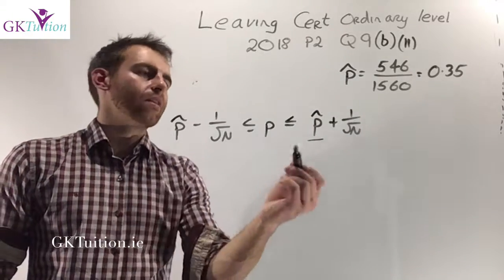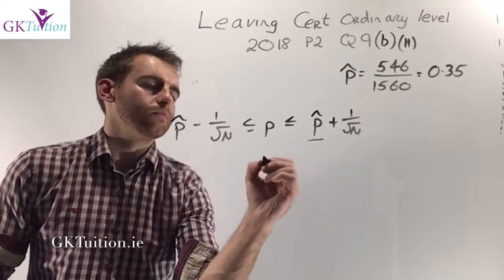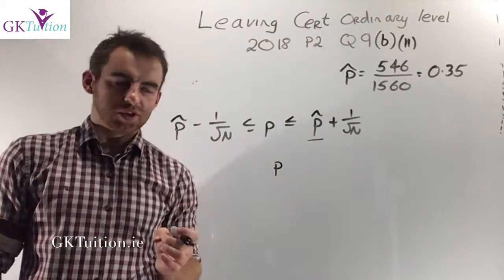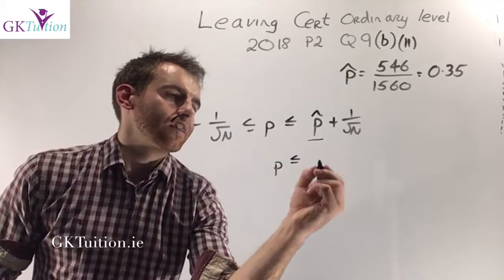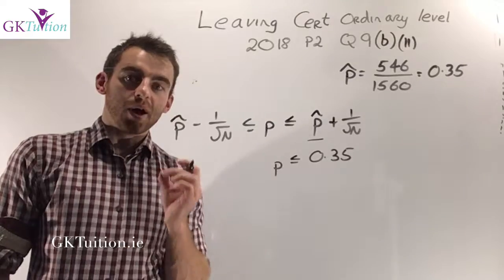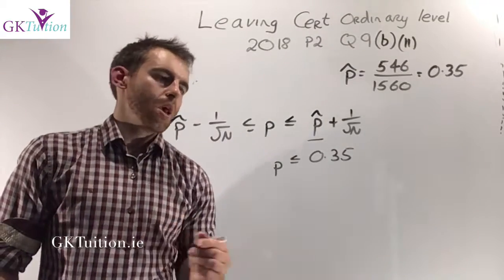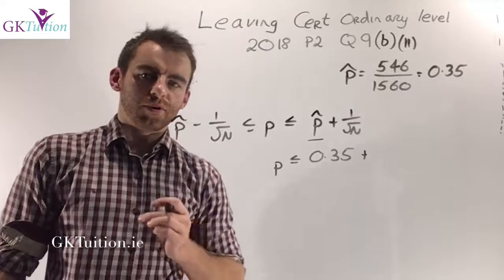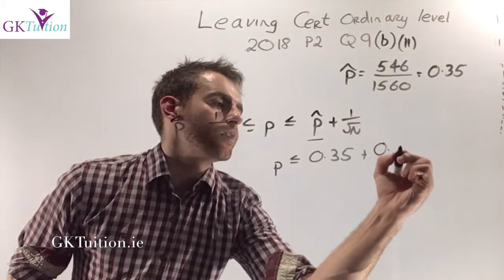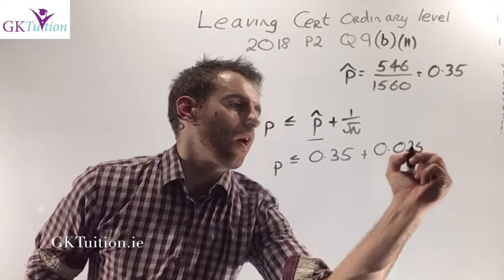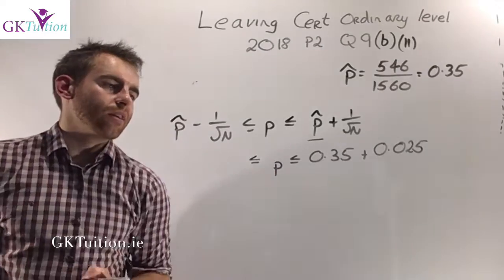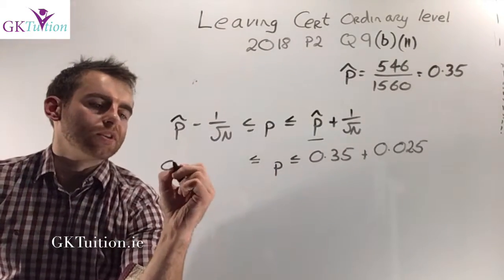We've already calculated our margin of error and we've just calculated our proportion. P in this case represents the proportion of people who enjoyed the show. 35% of my sample enjoyed the show. But based on the number of people that I've surveyed, the result could be off by 0.025 or 2.5%. On the left hand side, instead of plus I'm going to put in minus.